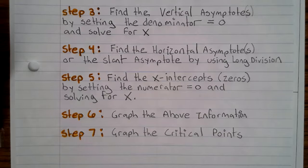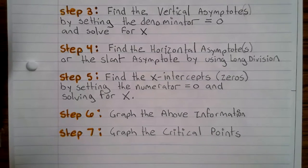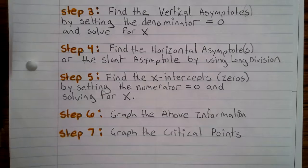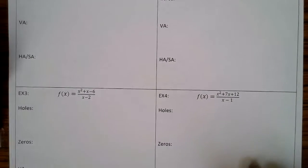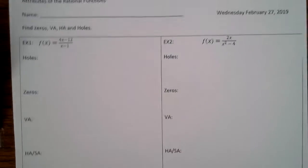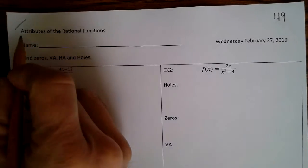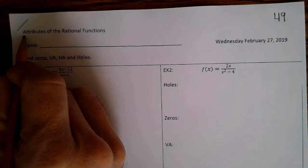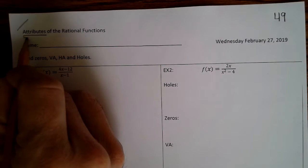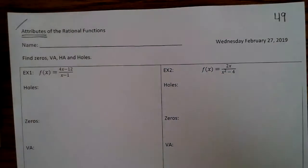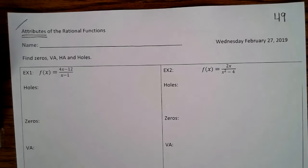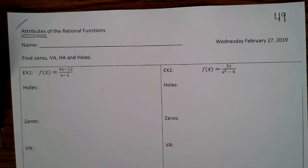Step 6: Graph the above information. Step 7: Graph the critical points. Finish up your notes. Now today we're just looking at the attributes, and at the next lesson we'll look at the attributes and graph the rational function.